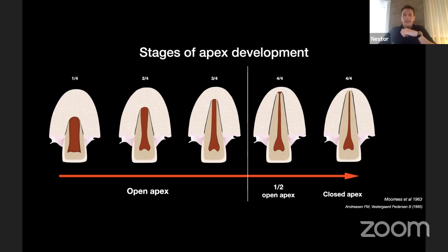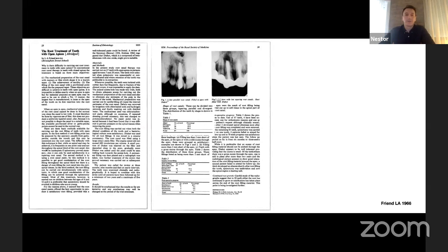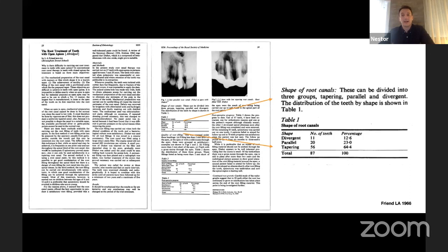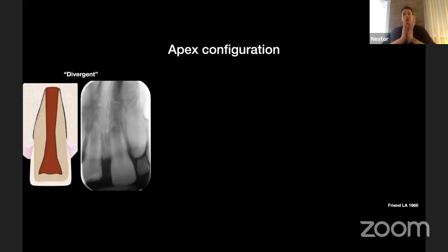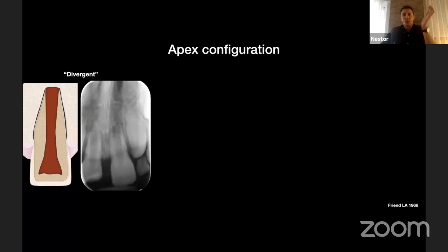This classification was also adopted by Andreasen in his studies. Another very early study by Frind in 1966 — one of the first outcome studies on treatments of immature teeth — described three types of apical configuration. The divergent apex, also called 'blunderbuss,' is funnel-shaped at the apical third and is the most difficult type to treat because the apical walls are divergent and difficult to disinfect. Then there is the parallel type, where canal walls are parallel to each other, and the tapered type, where the canal lumen is slightly convergent towards the apex.